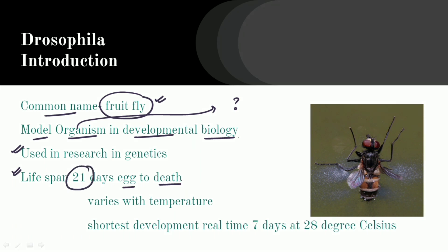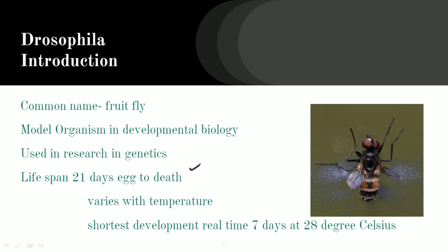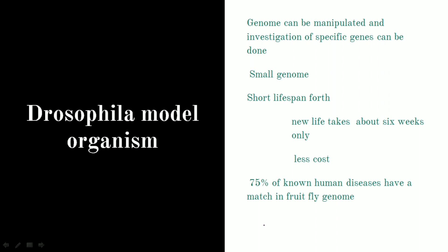The lifespan is from egg to death and it varies with temperature. If we look at the shortest developmental time, it takes seven days at 28 degrees Celsius. So the lifespan is 21 days, which can vary with temperature, and at 28 degrees Celsius the shortest developmental time is seven days.